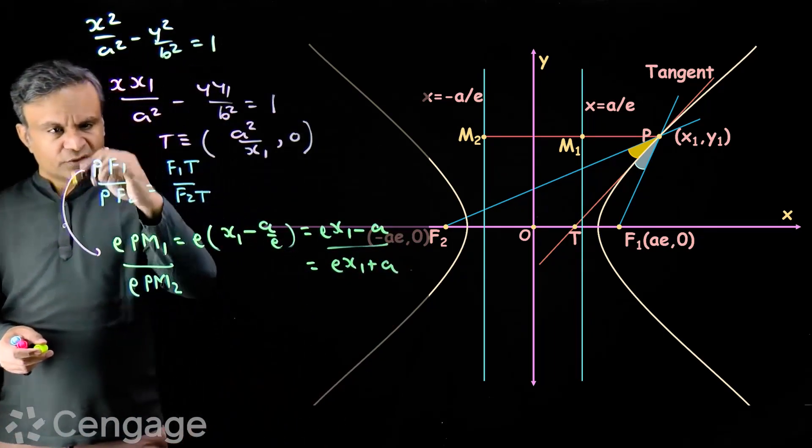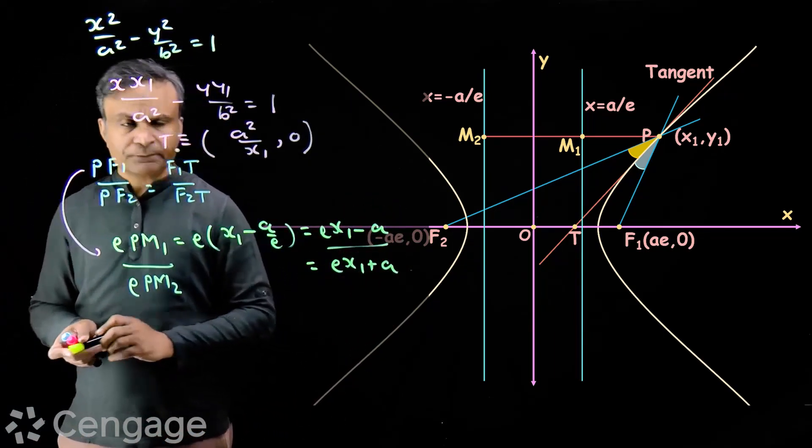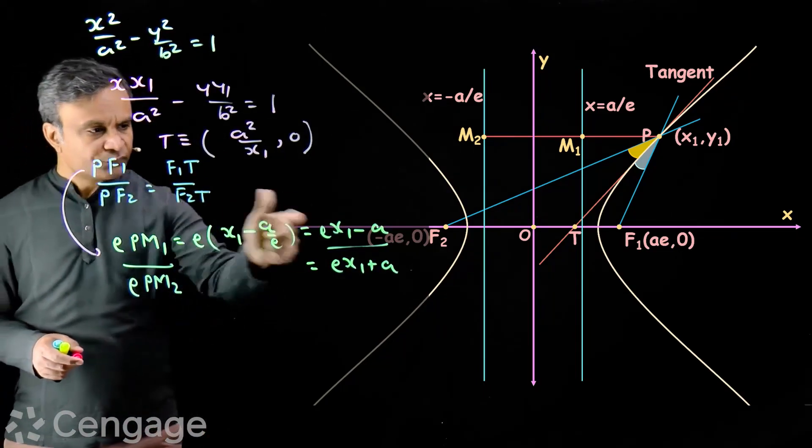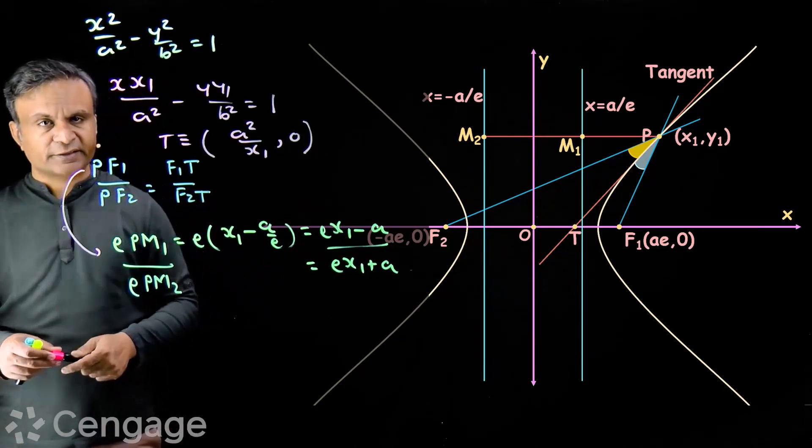So, we have this ratio as ex1 minus a over ex1 plus a. Now, we will compute this ratio and prove that it is equal to this.